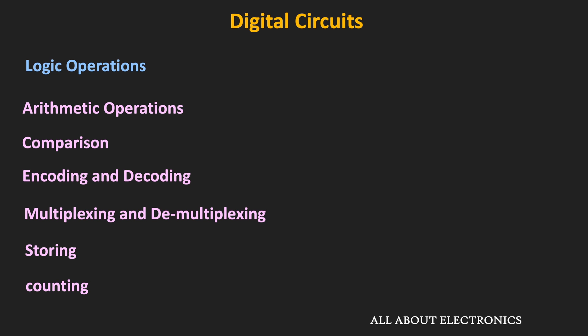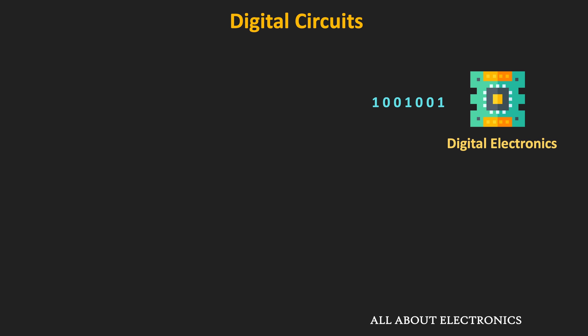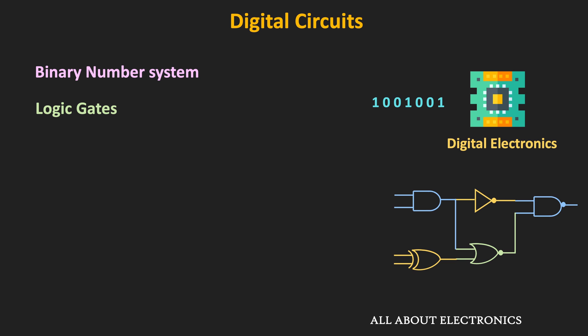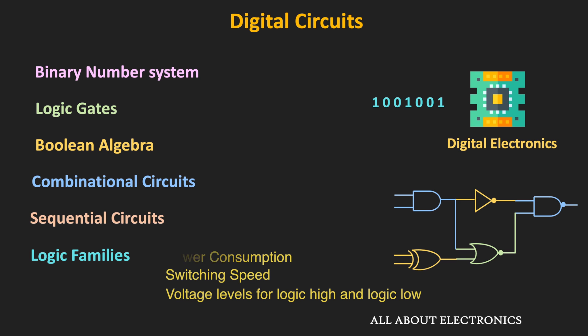Now let's look at the sequence in which we will study these topics. Since digital circuits deal with binary inputs, we will start with the binary number system and binary codes, then logic gates and Boolean expressions, Boolean algebra and minimization techniques, followed by combinational and sequential circuits. After that, we will learn about different logic families — because although logic gates are basic elements, internally they are combinations of transistors, and depending on how they are implemented, characteristics like power consumption, switching speed, and voltage levels will vary.